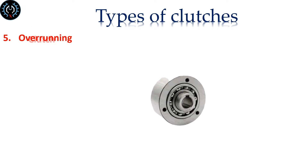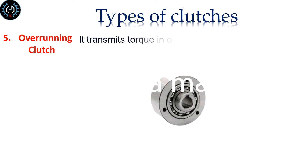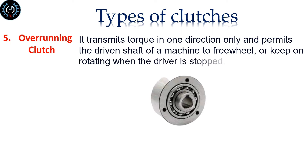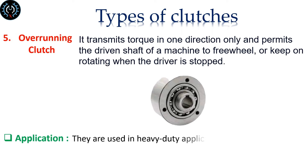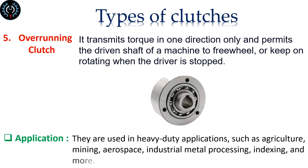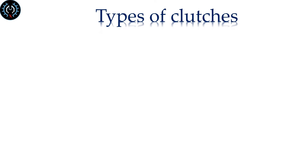Overrunning clutch. It transmits torque in one direction only and permits the driven shaft of a machine to freewheel, or keep on rotating when the driver is stopped. They are used in heavy duty applications such as agriculture, mining, aerospace, industrial metal processing, indexing and more.